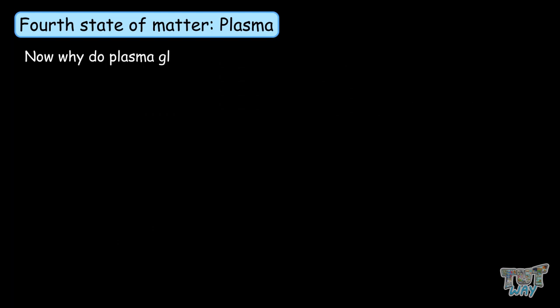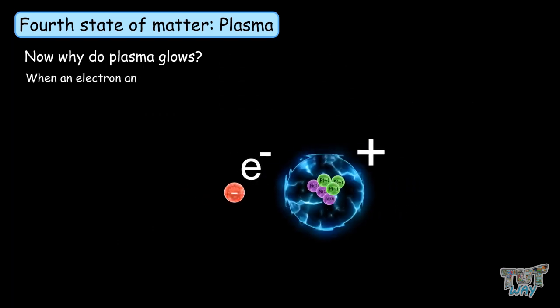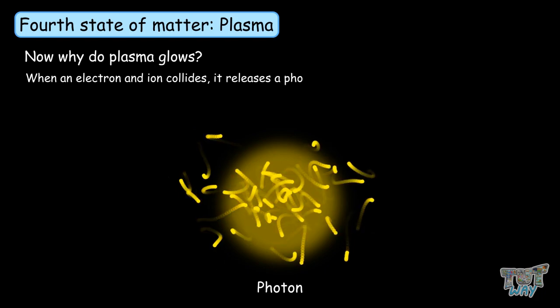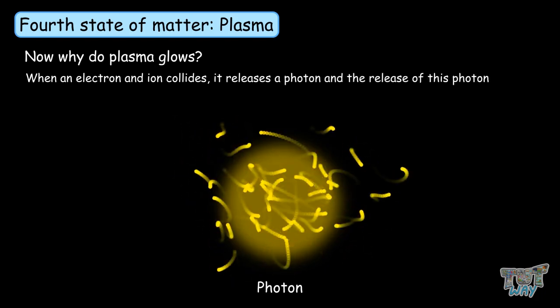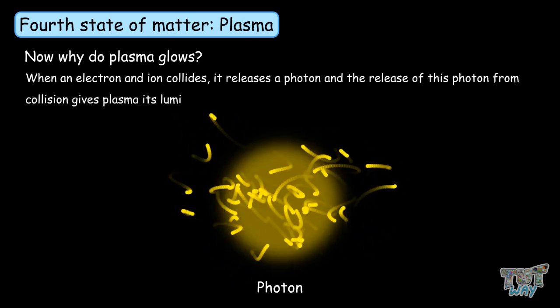Now, why does plasma glow? When an electron and ion collide, it releases a photon, and the release of this photon from collision gives plasma its luminescent glow.